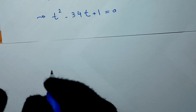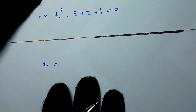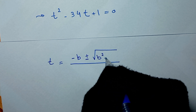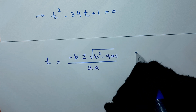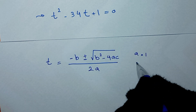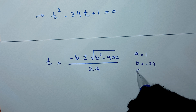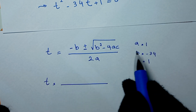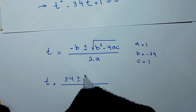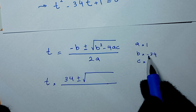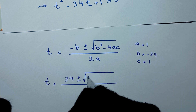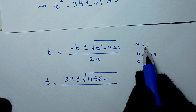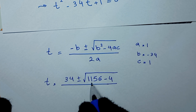From t² - 34t + 1 = 0, we apply the quadratic formula: t = (-b ± √(b² - 4ac)) / 2a. Here a = 1, b = -34, and c = 1. So t = (34 ± √(34² - 4·1·1)) / 2 = (34 ± √(1156 - 4)) / 2.